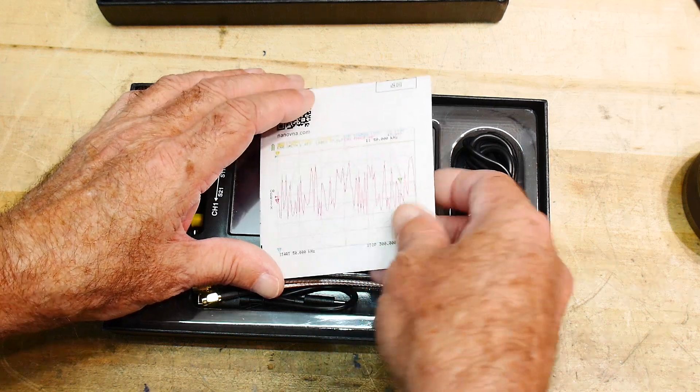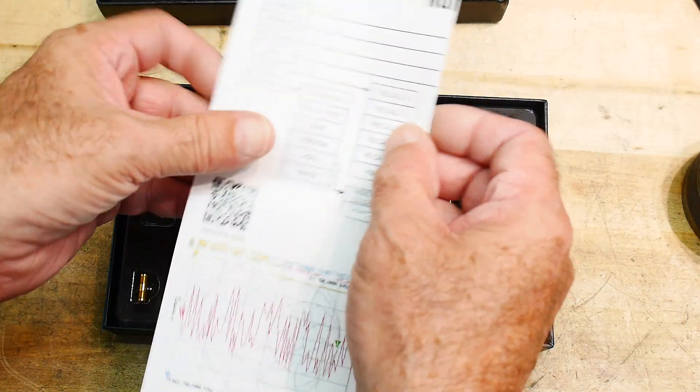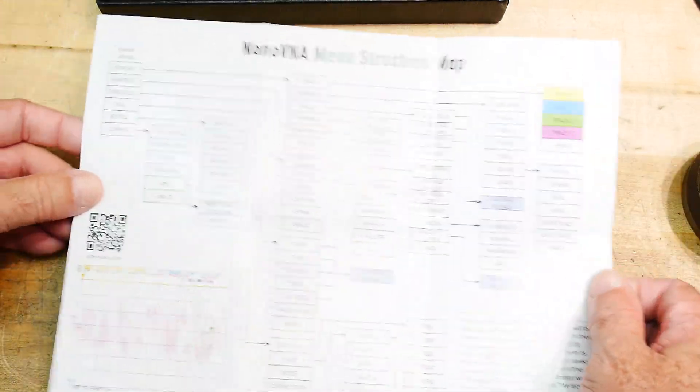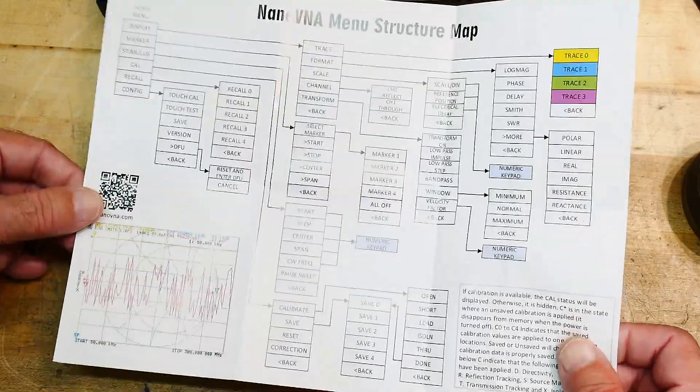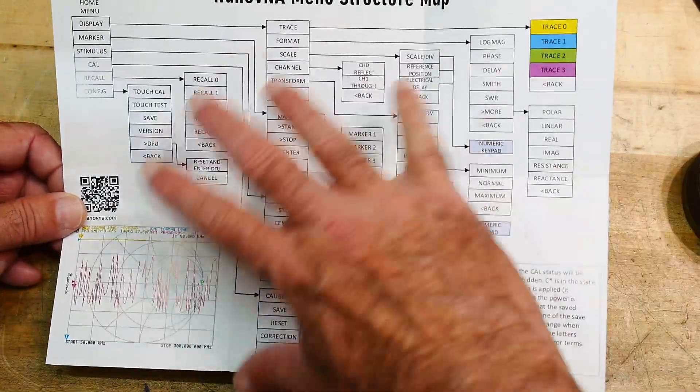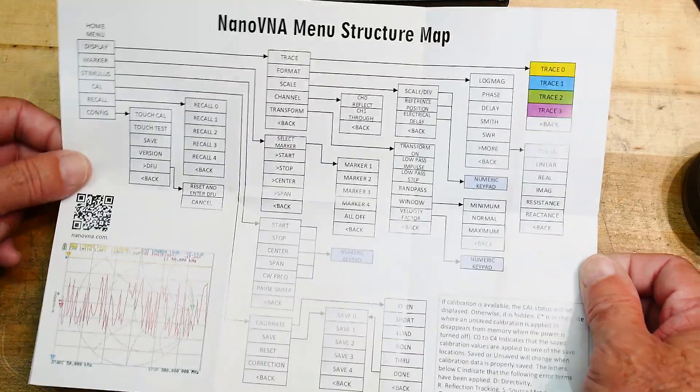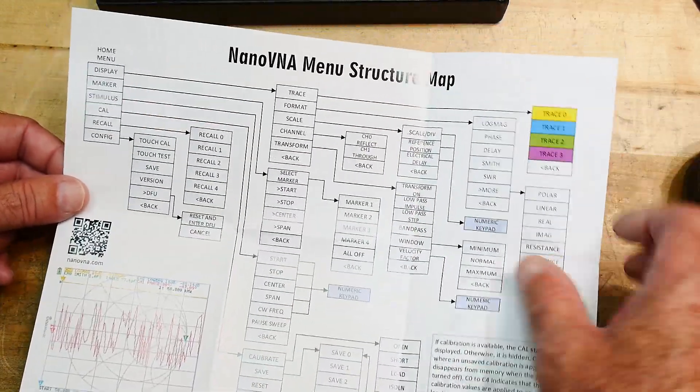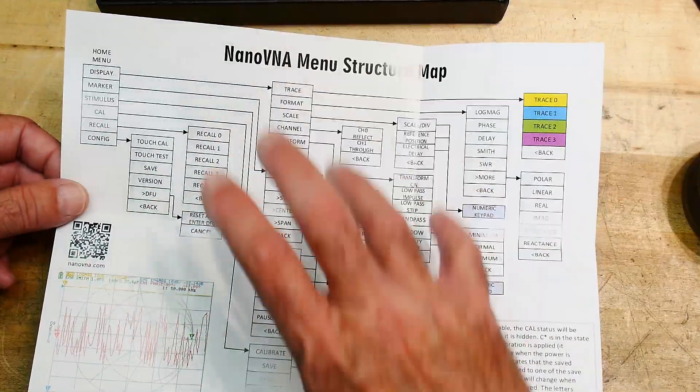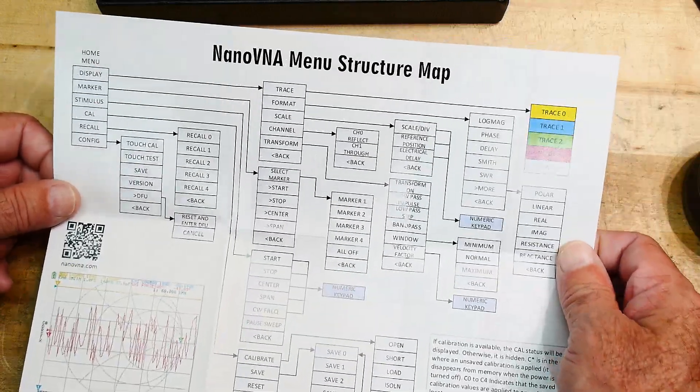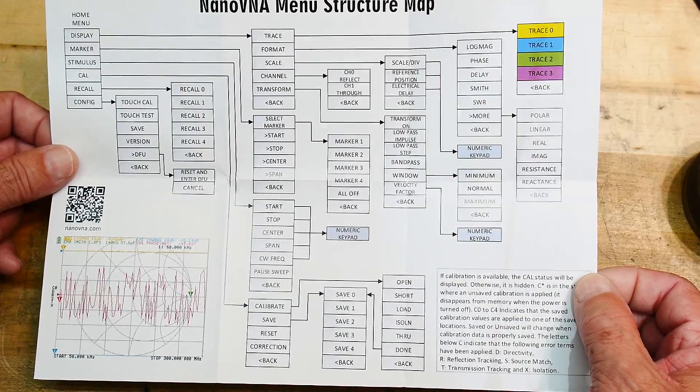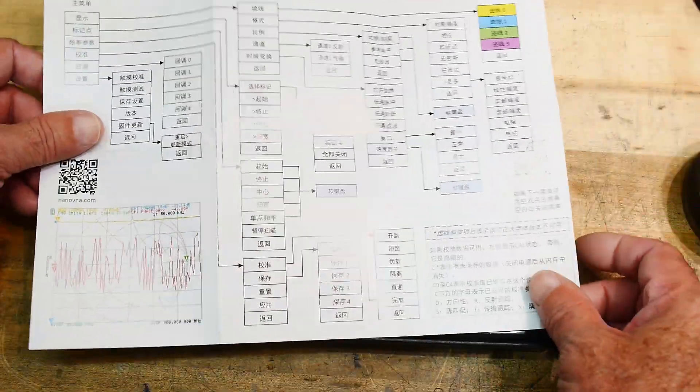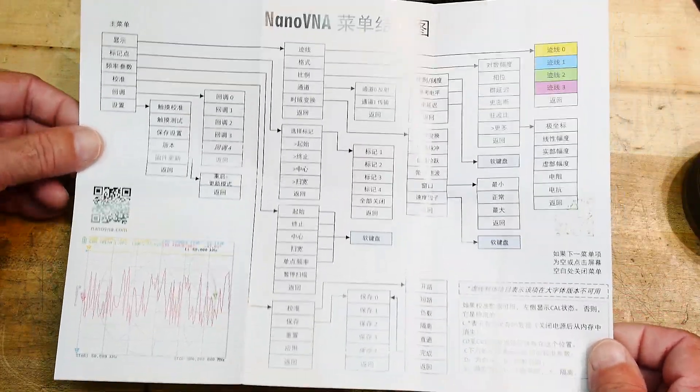It comes with some literature, and the literature gives you a structure for the software menu system. I think if you don't know what these things are, it might not help, but once you learn the VNA, it's nice to refer to. I don't think it would help you in the first place though. And on the back, it's the same thing, only in Chinese.